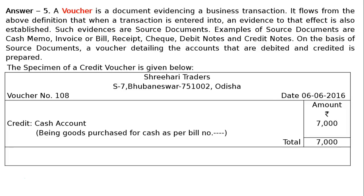Now this is to be totaled — it is 7000. And it is to be signed by both on the debit side as well as on the credit side, at the top left-hand bottom corner and right-hand bottom corner.